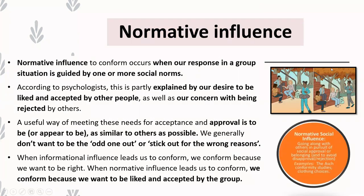Normative influence is like the examples at the beginning of the lesson. When you've got certain social norms — whether in your social group or in general society — we tend to be guided by those norms and conform our behaviour, thoughts, and feelings to be in line with them. For example, a girl originally had a different fashion style but when she saw another group all wearing striped jumpers, she changed her style to match the group. Normative influence suggests we conform because we want to be liked and accepted, and we don't want to be rejected by other people.